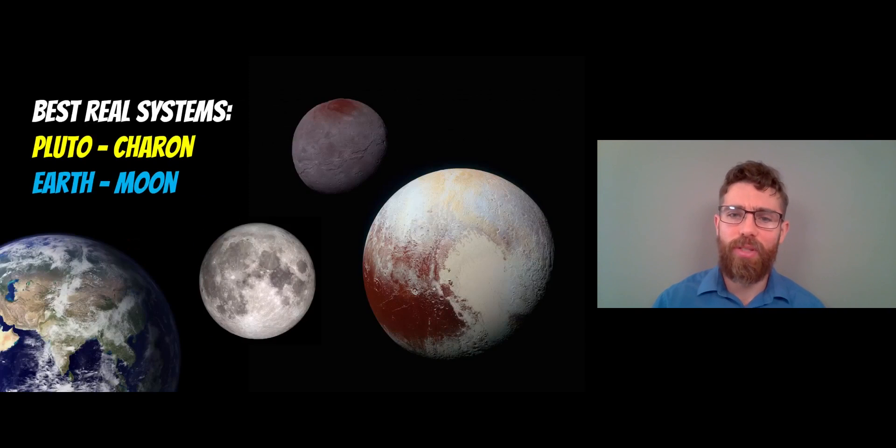So the best real systems so far is the Pluto-Charon example, which is towards the outer part of the solar system. They don't meet the criteria because they're not big enough. They're actually dwarf planets or minor planets. And then the Earth-Moon system is another good example. But again, the mass ratio is not quite equal. The Moon is still a little bit too small compared to the Earth. But these are the closest we've really got that we know about so far.